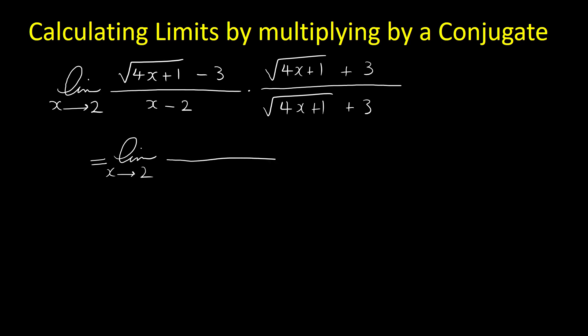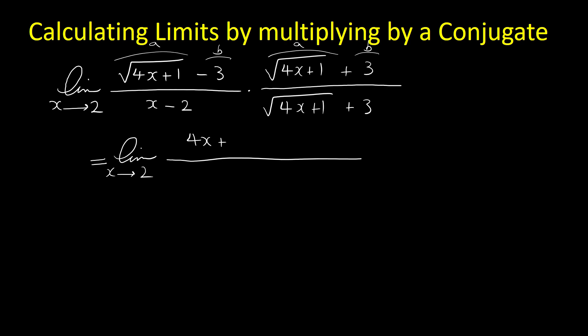If we multiply the expressions in the numerator, treating radical 4x plus 1 as A and 3 as B, then A minus B times A plus B equals A squared, which cancels the radical of A, giving us 4x plus 1, minus B squared. And B squared is 3 squared, or 9.